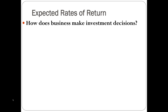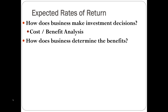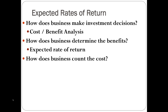Now, I want to talk a little bit about expected rates of returns. How does a business make investment decisions? They do what's called a cost-benefit analysis. Firms will decide to do something if the benefits exceed the costs. They look at the expected rate of return for benefits and interest costs for the costs. A business will invest if the rate of return is greater than the interest cost; if not, they will not.